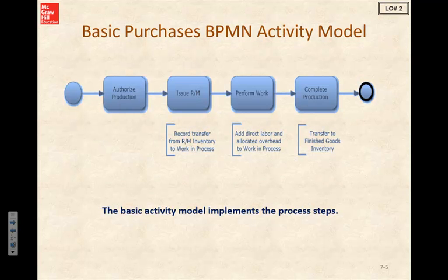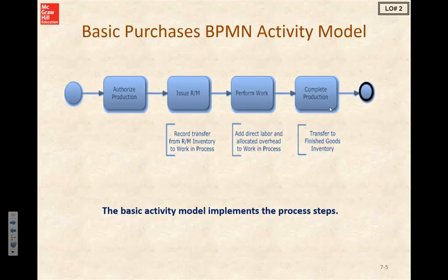Looking at how that translates into our BPMN activity model, we've got our starting point — the authorized production. We're going to issue our raw material inventory to work in process, perform our work, and then complete our production and end the process.